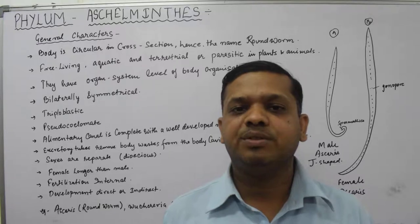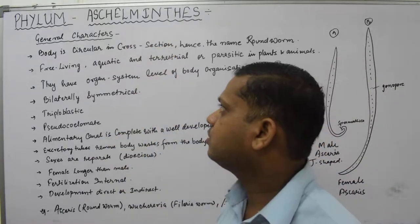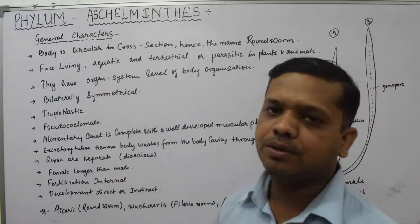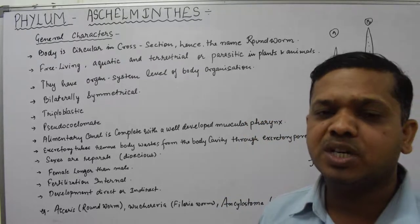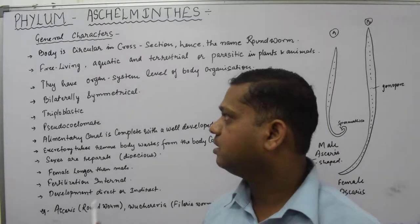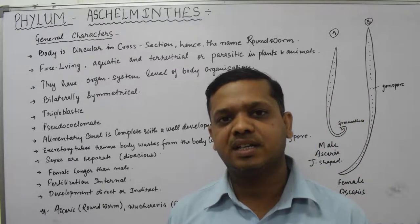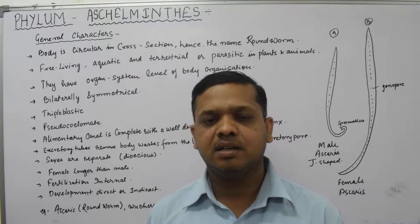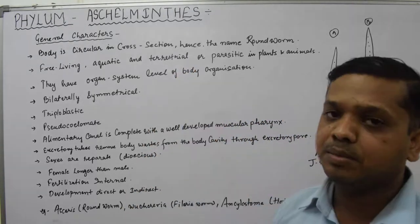Good afternoon. Today we will talk about phylum Aschelminthes. In this phylum we will see the general characteristic features of Aschelminthes. First of all, the important point to understand is that in this phylum the worms are roundworms, and the second important character is that they are endoparasites. We will see the characteristic features of this phylum one by one.